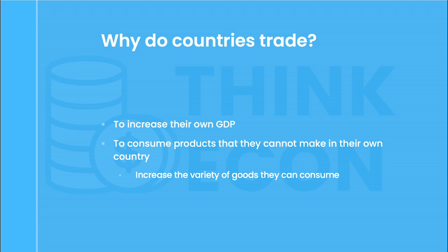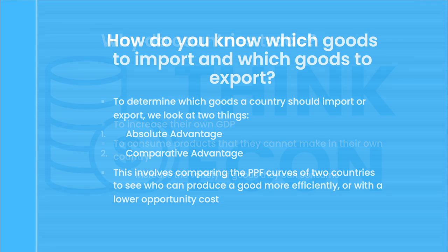So let's start with the basics. Why do countries or individuals trade with one another? Put simply, to increase their own GDP or to consume products that they cannot make in their own country. Trading can also increase the variety of goods that people can consume. But how do you know which goods to import and which ones to export? To determine which goods a country should import or export, we look at two things: absolute advantage and comparative advantage.